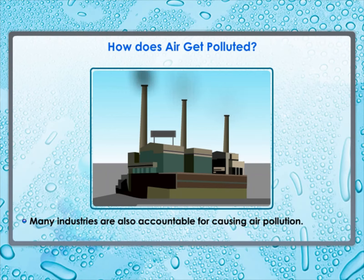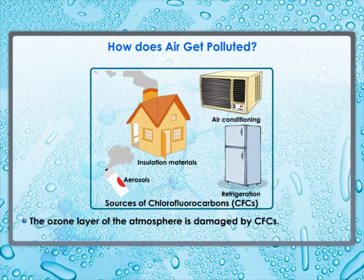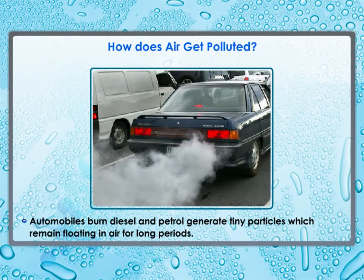Many industries are also responsible for causing air pollution. Petroleum refineries are a major source of gaseous pollutants like sulfur dioxide and nitrogen dioxide. Sulfur dioxide is produced by combustion of fuels like coal in power plants and can cause respiratory problems including permanent lung damage. Chlorofluorocarbons (CFCs), used in refrigerators, air conditioners, and aerosol sprays, damage the ozone layer. Automobiles burning diesel and petrol also produce tiny particles which remain suspended in air, reduce visibility, and cause diseases when inhaled. Such particles are also produced during steel making and mining, and power plants give out tiny ash particles which also pollute the atmosphere.